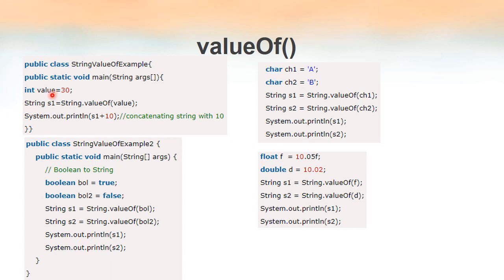In this program, we have declared a variable named value, its type is integer, and it is given a value of 30. We are using the valueOf method, passing the integer variable as the parameter. This method will return the corresponding string representation of this variable and it is stored inside S1. So now when we print S1 plus 10, S1 is already a string containing the value 30, so 30 plus 10 will return 3010. The output will be 3010 because S1 is a string, not an integer.